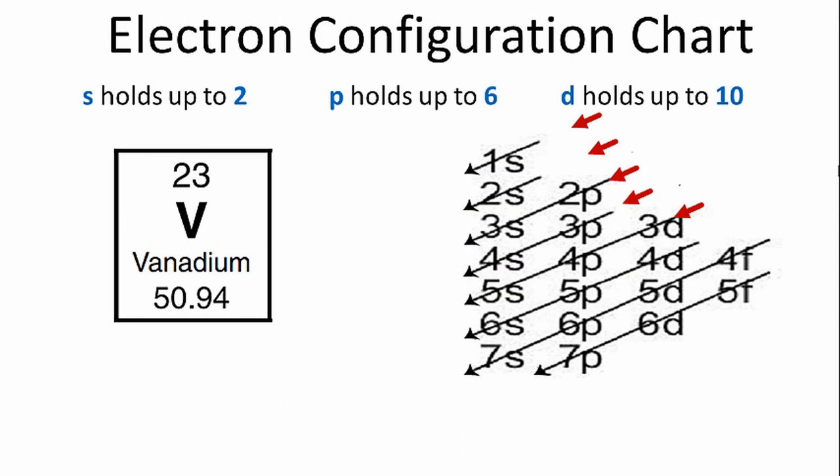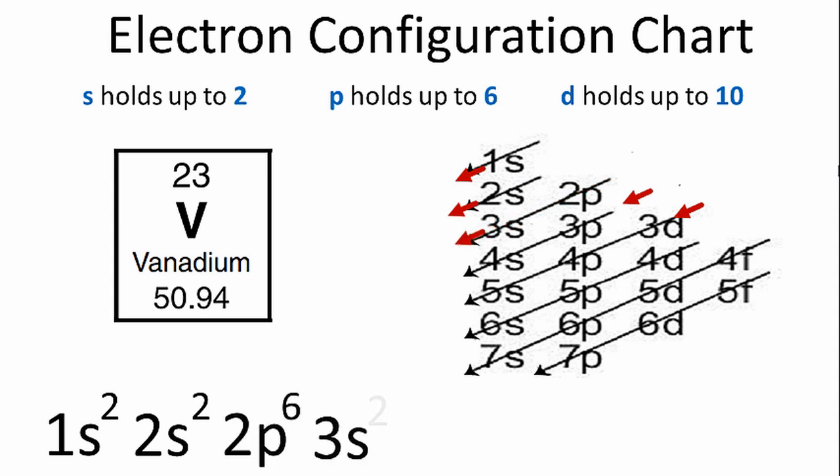Let's do one more. Vanadium has 23 electrons. Again, we have the 1s, which has two. We have the 2s. S holds two. And then we go to the 2p with six. We've used 10. And we have the 3s, which holds two. And then we go down the 3p and 4s. And then we've used 20 electrons, so we need three more.